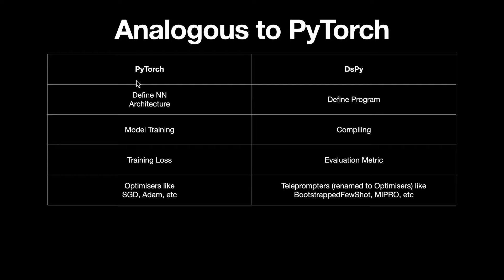To summarize the analogy between PyTorch and DSPy: in PyTorch we define neural network architectures, but in DSPy we define programs and how different components interact. In PyTorch we train models; in DSPy we compile models, which is equivalent to training. In PyTorch we have a loss to optimize for; in DSPy we have an evaluation metric. And in PyTorch we have optimizers like SGD and Adam; in DSPy we have teleprompters — recently renamed to optimizers — such as bootstrapped few-shot and MIPRo.